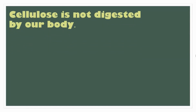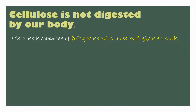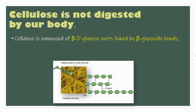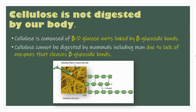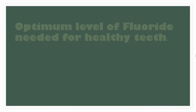Coming to the next statement: cellulose is not digested by our body. Cellulose is composed of beta-D-glucose units linked by beta-glycosidic bonds. It cannot be digested by mammals, including humans, due to the lack of enzymes that cleave beta-glycosidic bonds. Therefore, cellulose is not digested by our body.